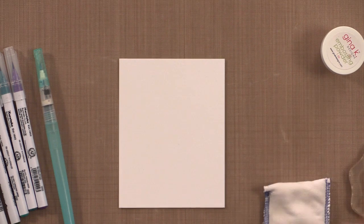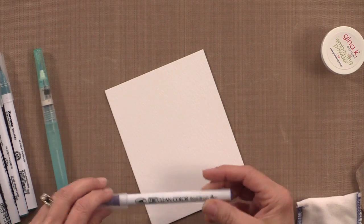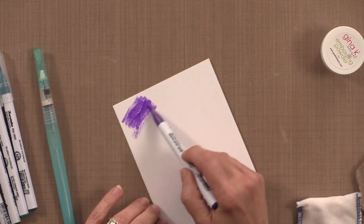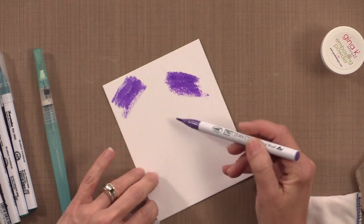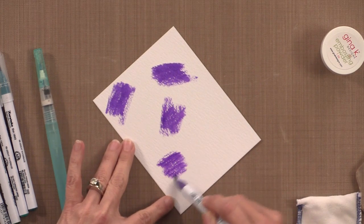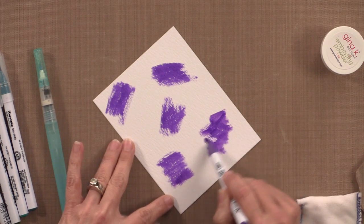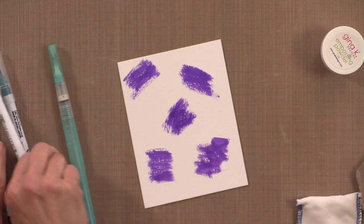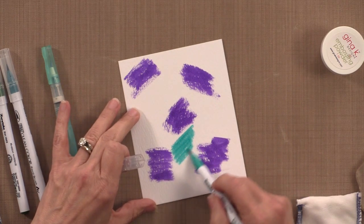So to begin, you're going to use some of these clean color markers and you're just going to scribble color wherever you want. The thing about these markers is they're so vibrant and I like to lay down lots of color. You can see I'm not doing it in any particular pattern or order, I'm just putting color down wherever.